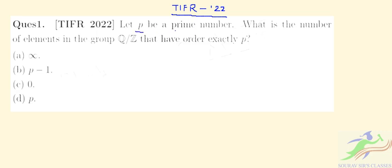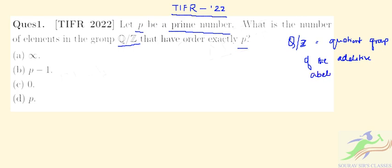So what is given? Let P be a prime number. What is the number of elements in the group? This is a quotient group Q upon Z that have order exactly P. So what is this group? This is the quotient group of the additive abelian group of rational numbers by its subgroup of integers.